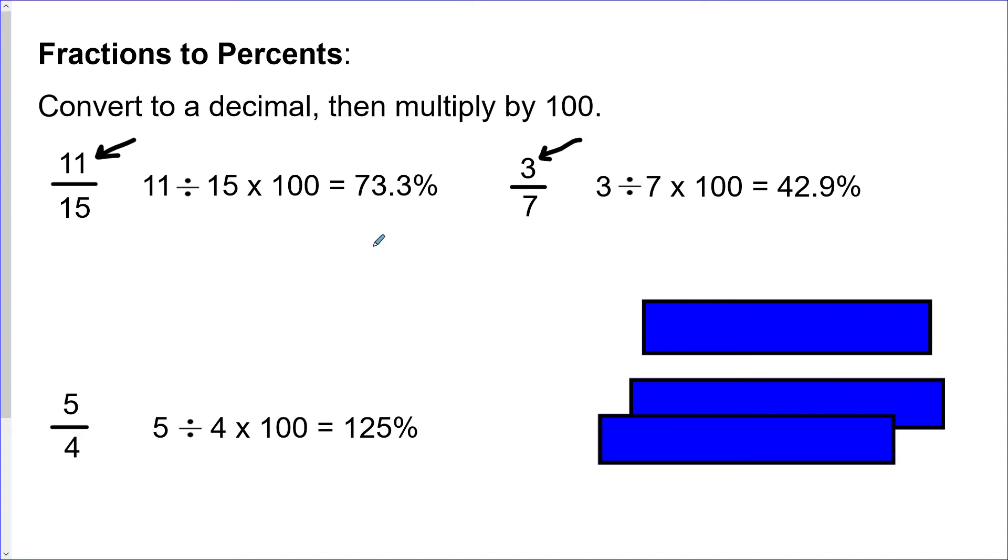Just as a way of error checking your numbers, if you have the numerator smaller than the denominator, so these two for example where the top is smaller than the bottom, your percent in the end will be smaller than 100. When you have the numerator bigger, like this one, your percent in the end will be bigger than 100 percent.